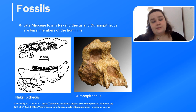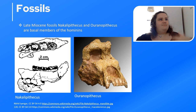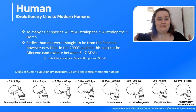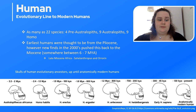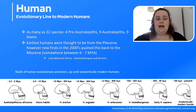Moving on to the evolutionary line that leads to us: there have been as many as 22 different species, four of which are pre-Australopiths, nine are Australopiths, and nine are Homo. The earliest humans are thought to be from the Pliocene, but new finds from the 2000s push this back to the Miocene, roughly 6 to 7 million years ago — for example, the late Miocene African Sahelanthropus and Orrorin.